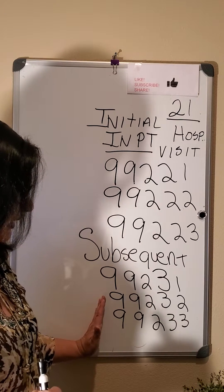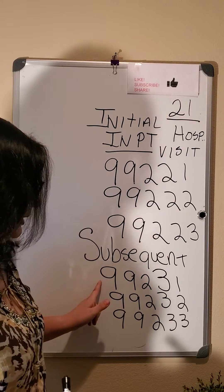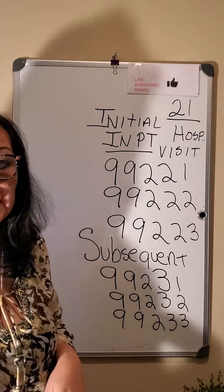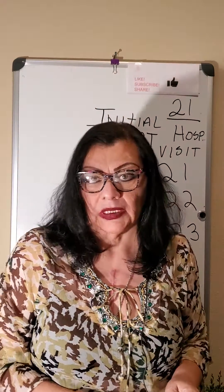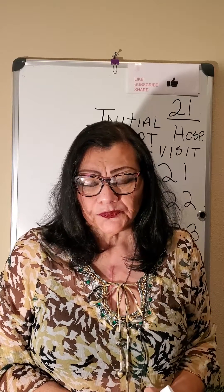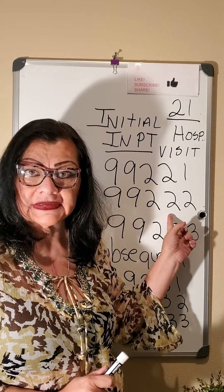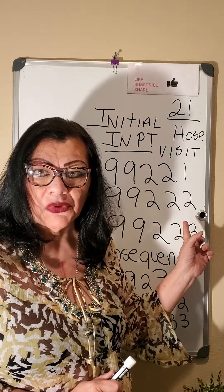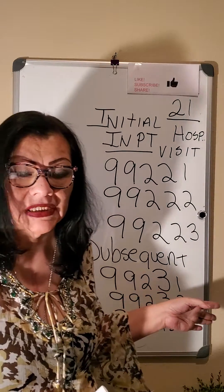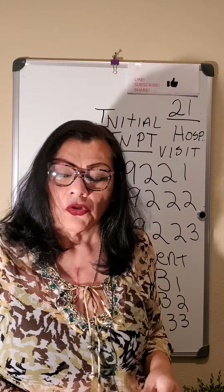99231, 99232, and 99233. The doctor can only bill once from the three initial codes. However, the doctor can bill as many times as he goes to see the patient while the patient is in the hospital using the subsequent codes.